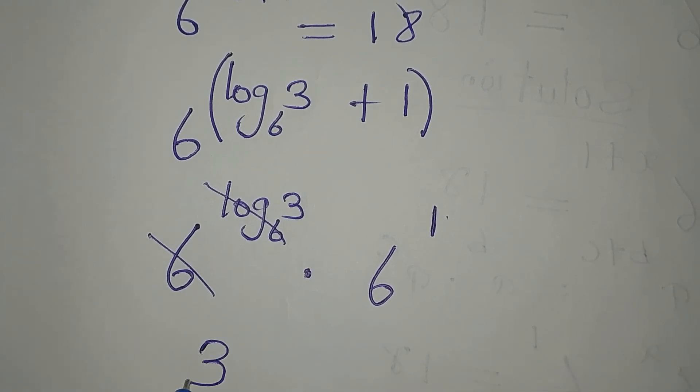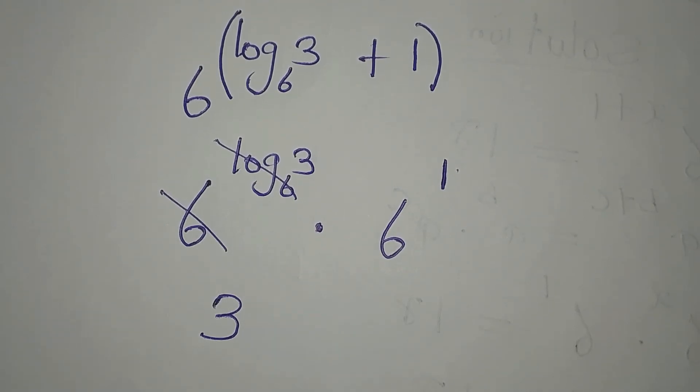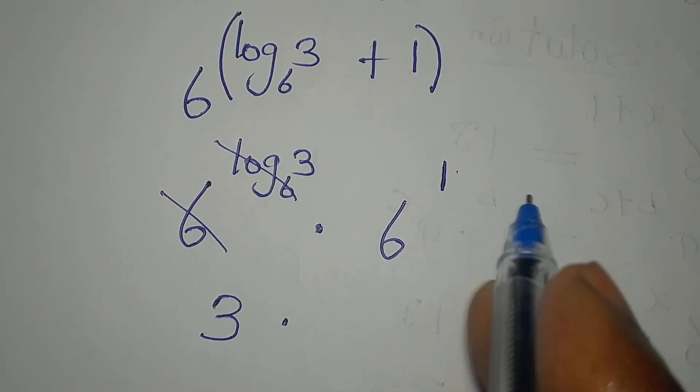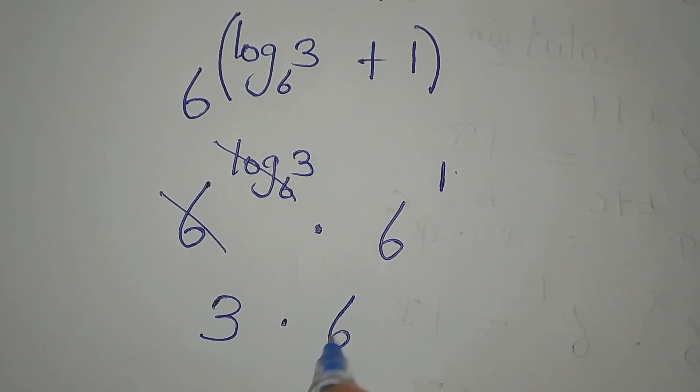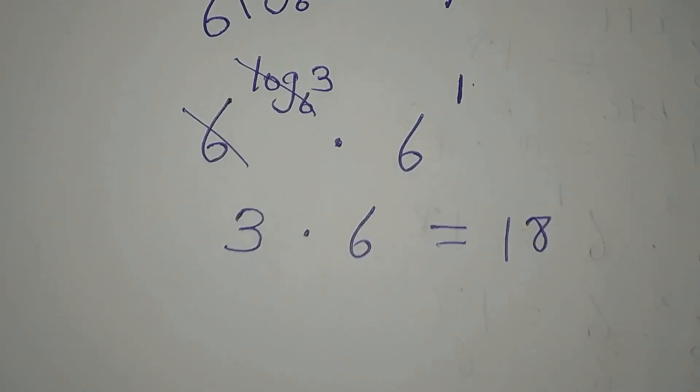Now another law is this and this can go, so that the whole of this will give us 3, provided 6 that is here is the base to the log there. And then we multiply by 6 to the power of 1, which is the same as 6, and 3 times 6 is 18. Remember, the given equation is 6 to the power of x plus 1 equals 18, and that's the same 18 over there.